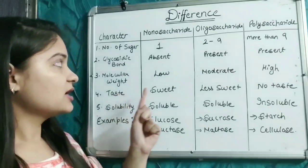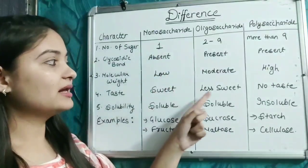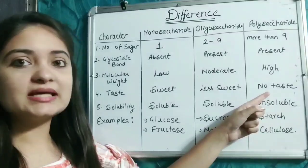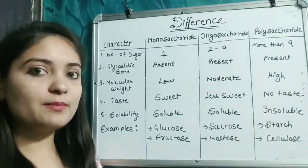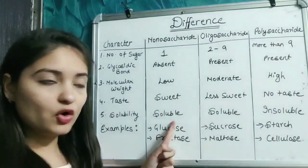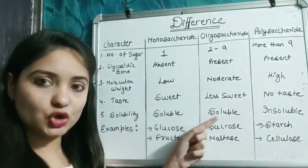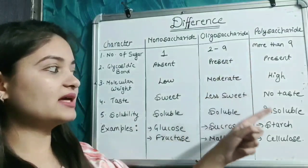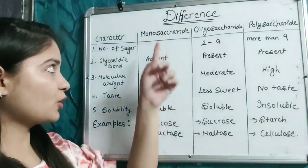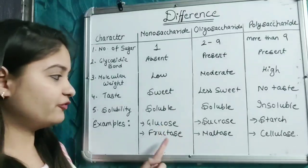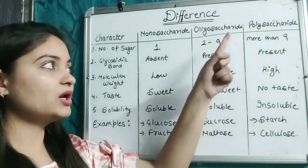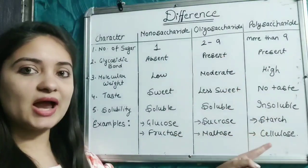Regarding taste: monosaccharides have a sweet taste, oligosaccharides are less sweet, and polysaccharides have no taste. Regarding solubility: monosaccharides and oligosaccharides are soluble in water, but polysaccharides are insoluble in water. Examples: monosaccharides include glucose and fructose; oligosaccharides include sucrose and maltose; polysaccharides include starch and cellulose.